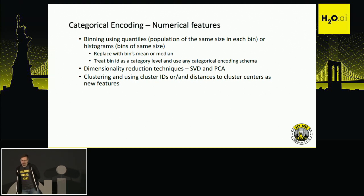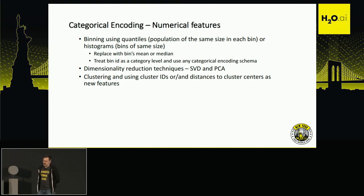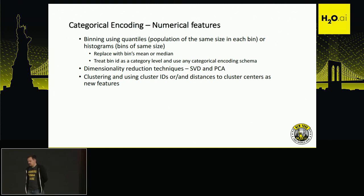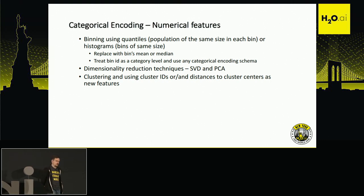Sometimes, especially for tree models, dimensionality reduction techniques can be helpful. You can apply SVD or PCA on top of your numerical features to get a compact representation. Also, since tree-based models don't handle the notion of distance well, you can calculate different clusters and use the cluster ID or distance to cluster centroids as new features in your dataset.